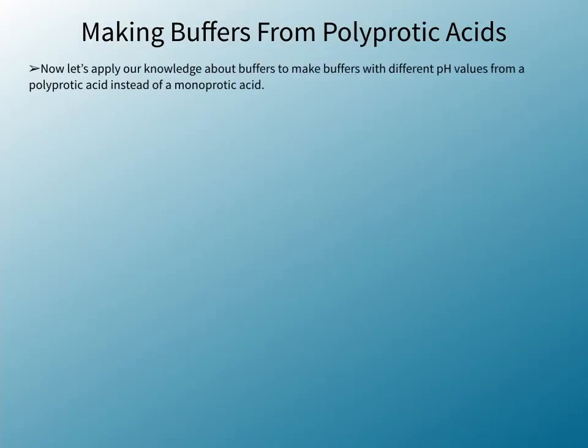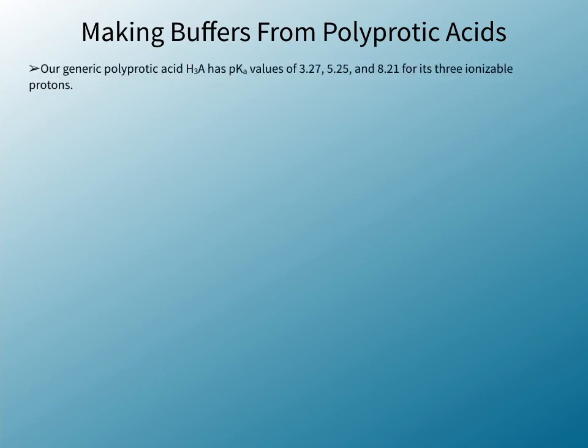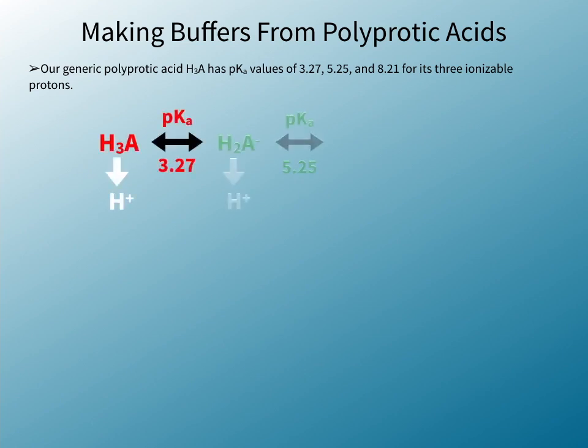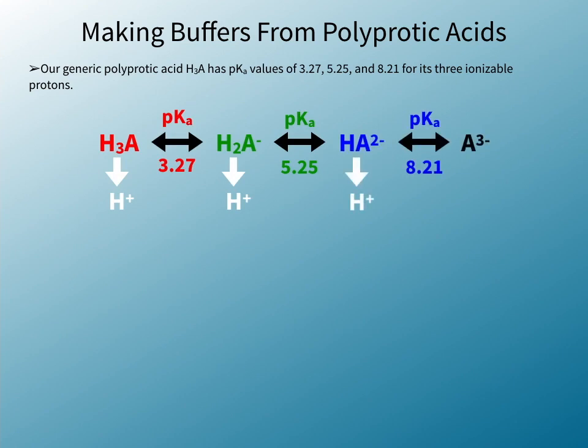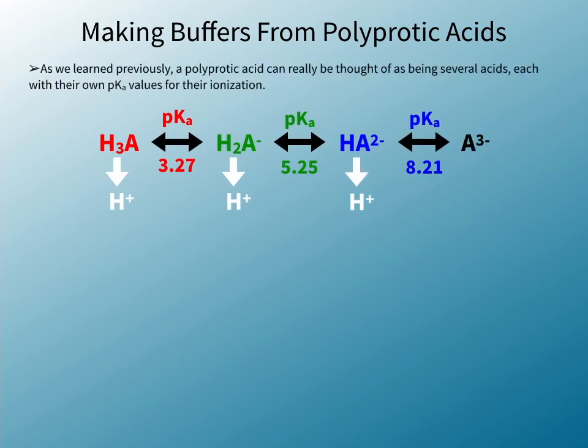Now let's apply our knowledge about buffers to make buffers with different pH values from a polyprotic acid instead of a monoprotic acid. Our generic polyprotic acid, H3A, has pKa values of 3.27, 5.25, and 8.21 for its three ionizable protons. As we learned previously, a polyprotic acid can really be thought of as being several acids, each with their own pKa values for their ionization.